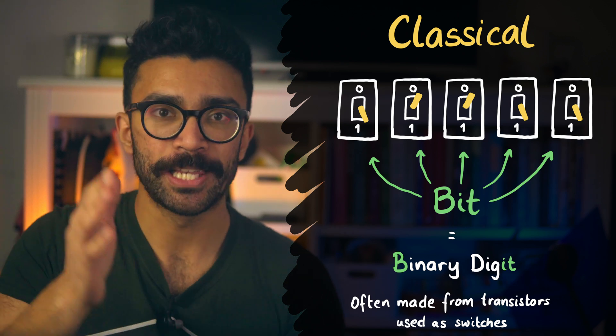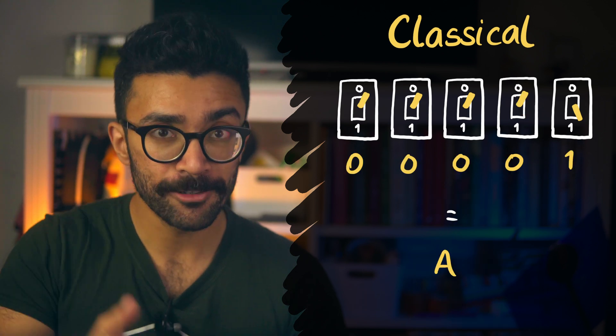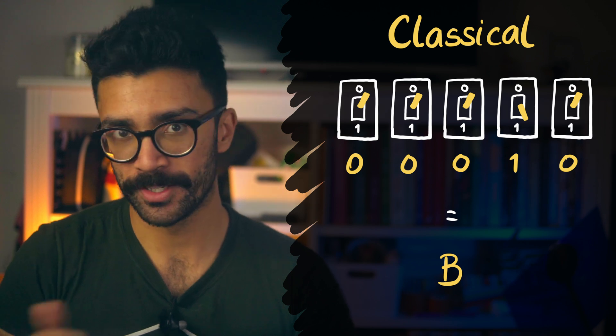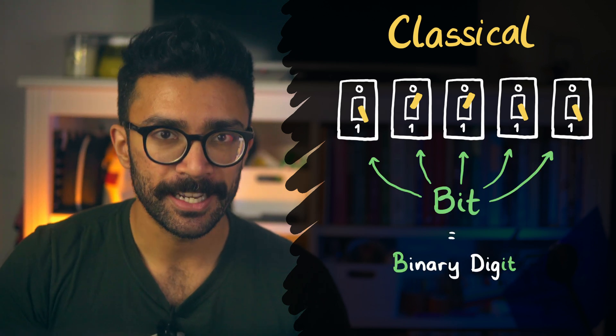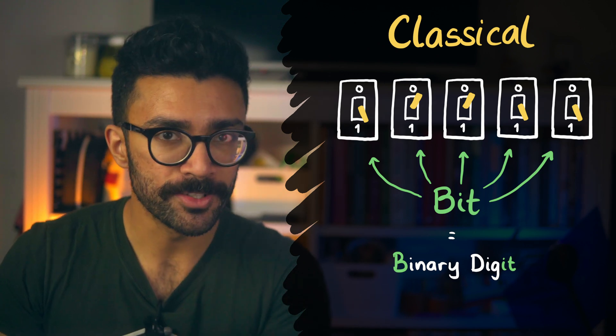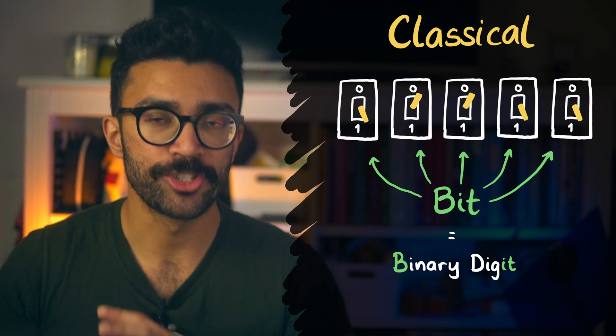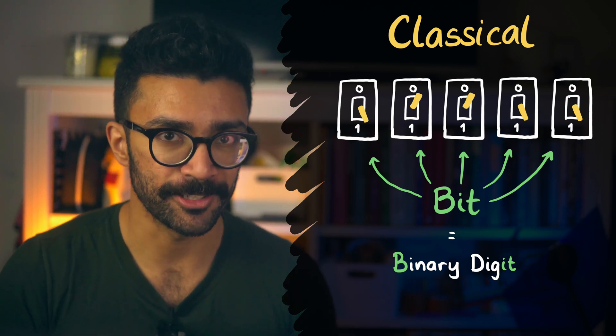The exact names we give these states don't matter, so we'll stick with 0 and 1 for this video. Usually, these are made from little transistors within the computer device. We can then use the states of lots of bits to store information. For example, we can store letters by using a binary representation of each one: 00001 could be A, 00010 could be B, and so on. This isn't necessarily the exact convention used, but that's the principle. Lots of bits together can be used to store data, and changes in these bits can be used to do complex computing tasks and calculations.